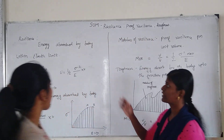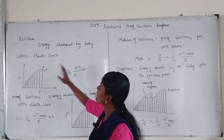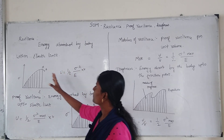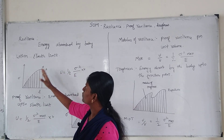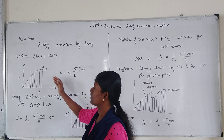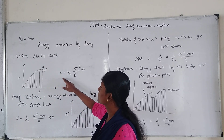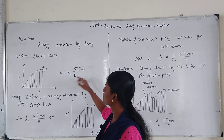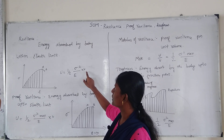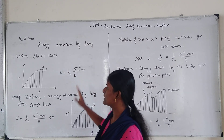First, Resilience. Resilience is the energy absorbed by the body within the Elastic Limit — how much energy is absorbed by the body up to the Elastic Limit. The formula is: U = (1/2) × σ² / E × V. This is the Resilience formula.